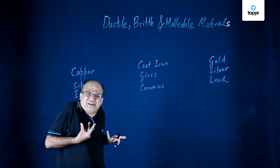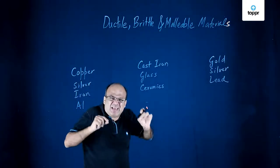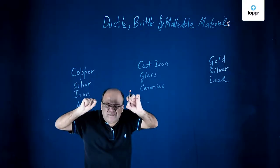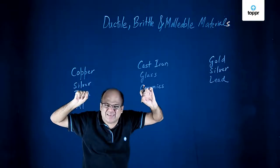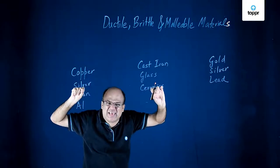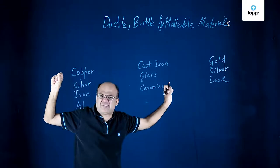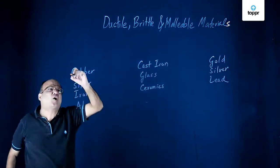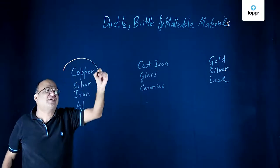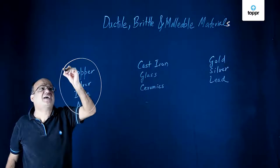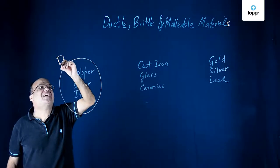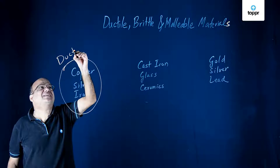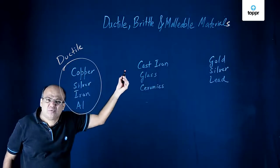What are ductile materials? Ductile materials can be drawn into thin wires. They have a large range of plastic extensions. Copper, silver, iron, and aluminium are all ductile materials — they can be drawn into thin wires.